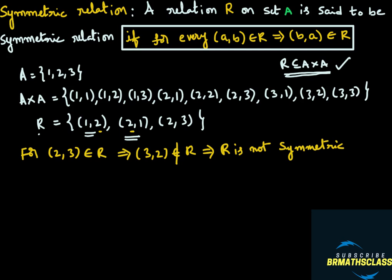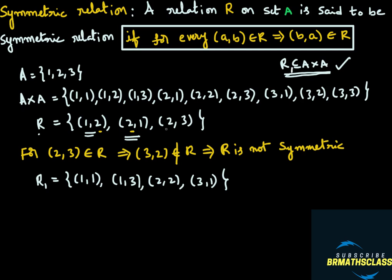Now we will try to understand this with one more example. I will take a relation R1 on A: ordered pairs (1,1), (1,3), (2,2), (3,1). R1 is a subset of A cross A, so R1 is a relation on A. Is this relation symmetric? We will take each and every ordered pair and check that ordered pair (B, A) is there or not. You take ordered pair (1,1) — the reverse order is also (1,1). This type of ordered pair always satisfies the symmetric condition.